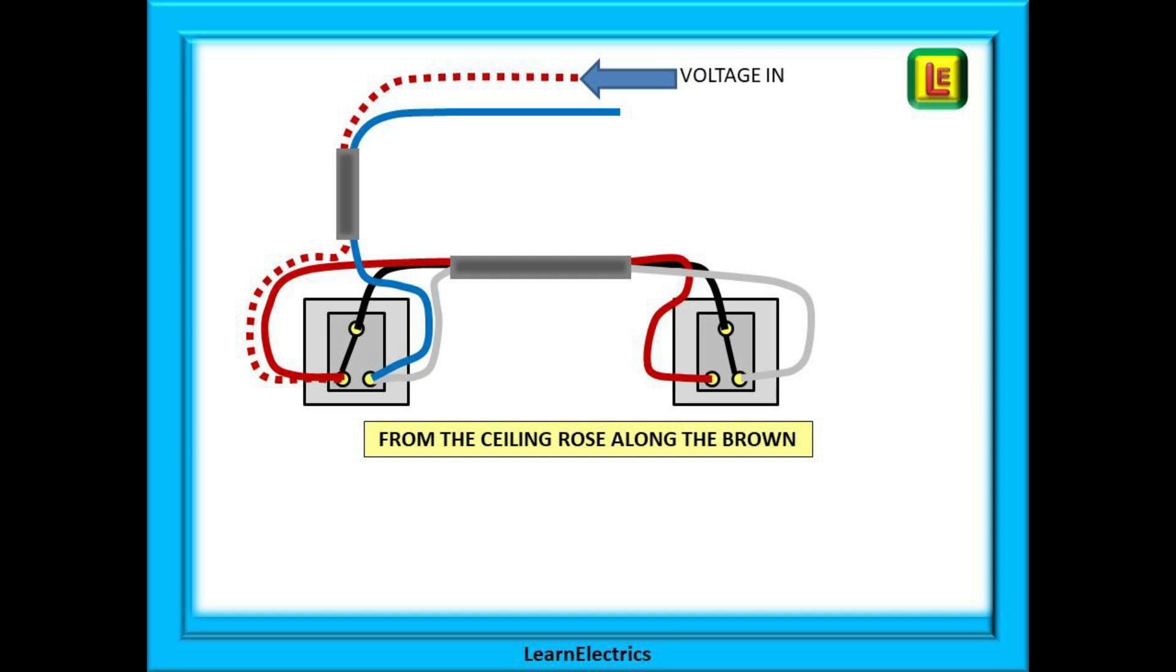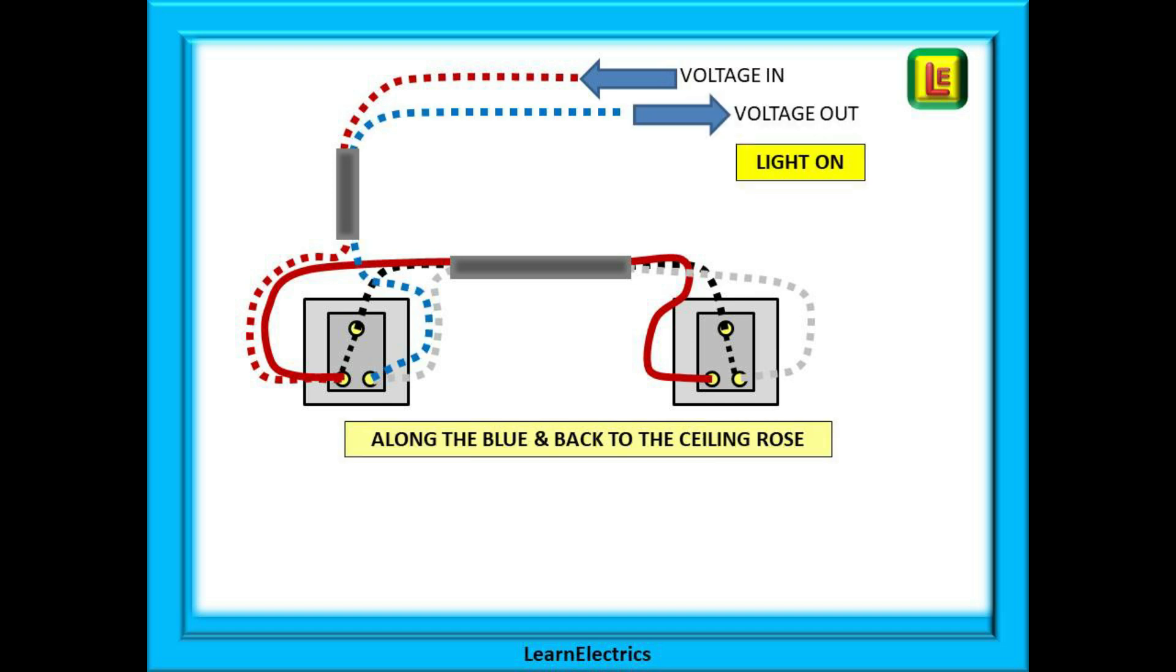The voltage travels along the switch wire to L1 of the first switch, and now through the switch to the common terminal, along the black strapper wire to the common terminal of the second switch, and then to the L2 terminal. From L2 along the grey strapper wire to L2 of the first switch, along the blue wire back up the switch wire to the ceiling rose where it causes the light to come on. And the circuit is in fact complete.